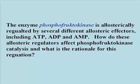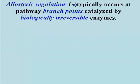Once you know where these molecules are produced or consumed in cells in respiration or other metabolic reactions, think about how and why each of these effectors works on this enzyme. Allosteric regulation of enzymes occurs at major biochemical pathway branch points, often ones catalyzed by biologically irreversible enzymes.